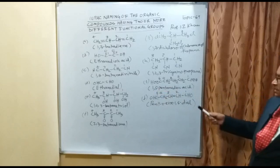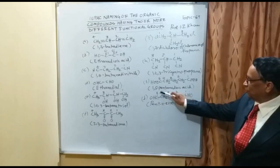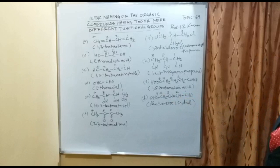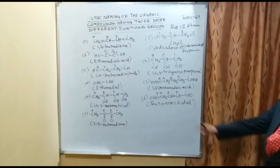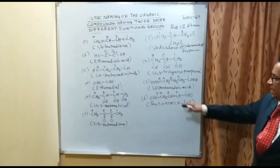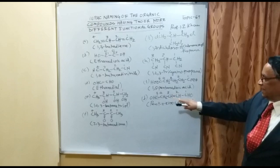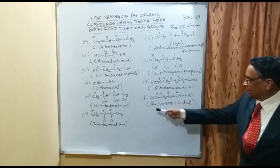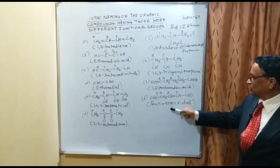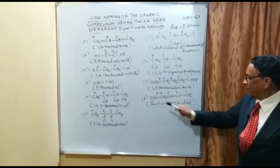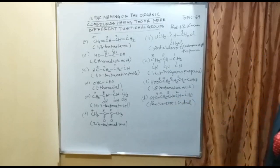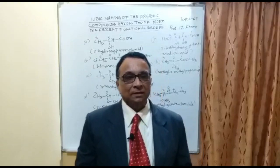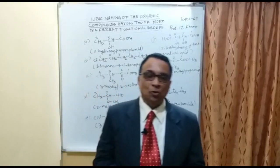Example J has 5 carbons numbered 1 through 5. At carbon 1 and carbon 5 there are aldehyde groups, and at carbon 2 there is a double bond. So the name is pent-2-ene-1,5-dial — 'dial' indicating two aldehyde groups.